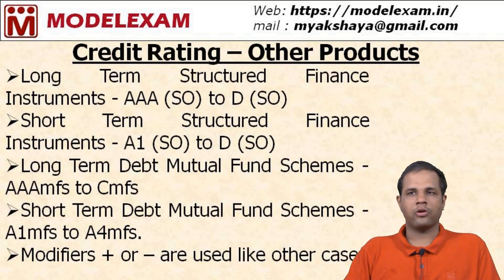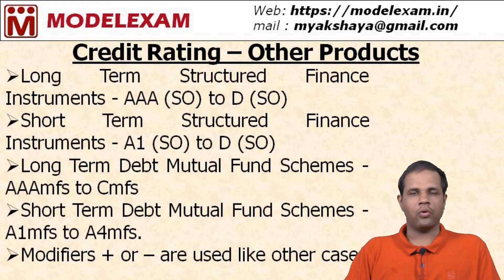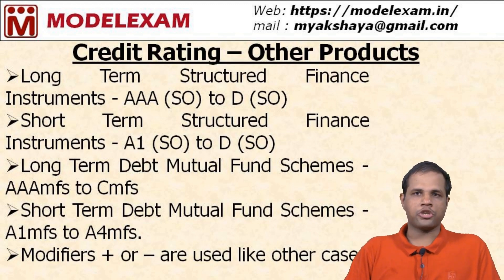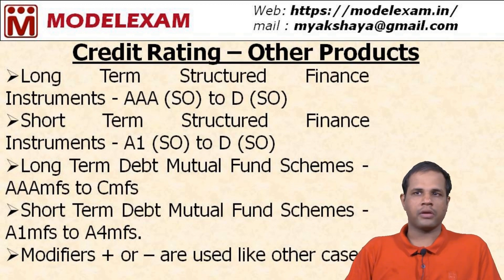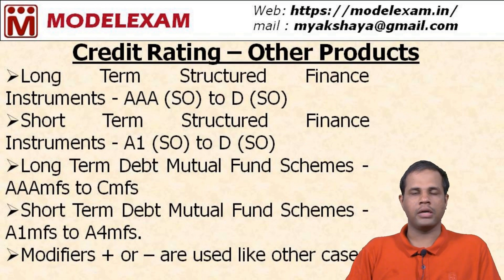Credit rating symbols for other products. Credit ratings can also be given to long-term structured finance instruments — starting from AAA SO and ending with D SO — and short-term structured finance instruments, ranging from A1 SO to D SO. Long-term debt mutual fund schemes are rated from AAA MFS to C MFS, and short-term debt mutual fund schemes from A1 MFS to A4 MFS. Here also, plus or minus modifiers can be used, as will be covered in the next slide.